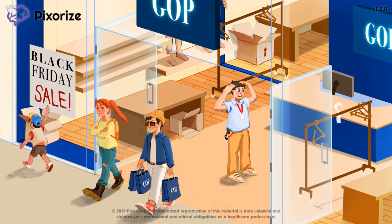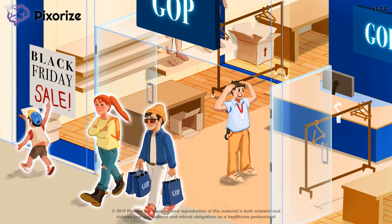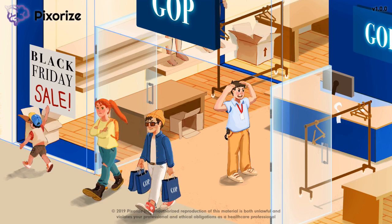Malthusian theory is a theory of demographic change. Specifically, it postulates that continued population growth will eventually outstrip the limited resources of our world. Once this happens, the death rate will climb until it passes the birth rate, and the population will begin to shrink. The population will continue to shrink in this way until it reaches a size that can be sustained by existing resources.